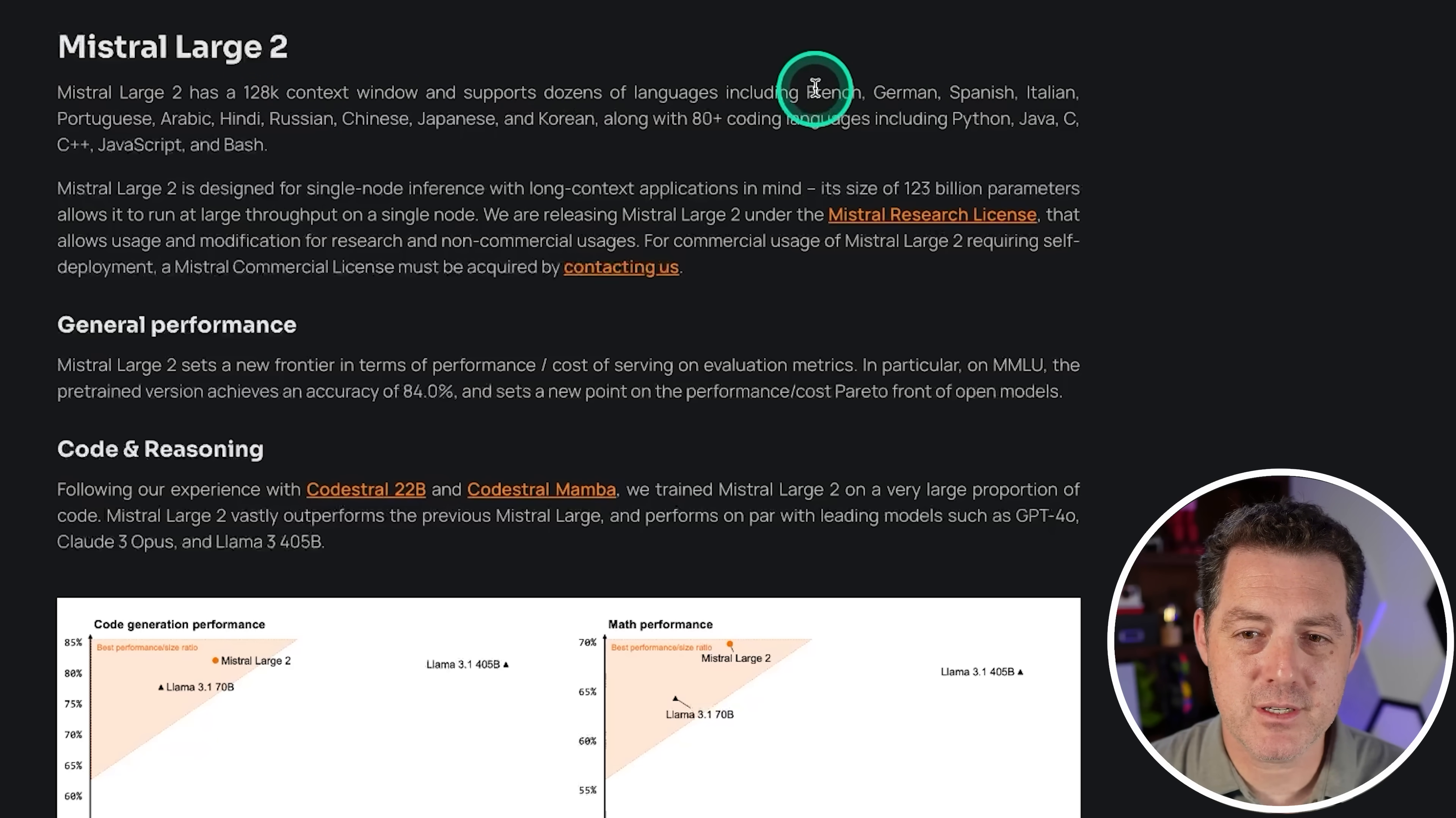Supports dozens of languages, including French, German, Spanish, Italian, Portuguese, Arabic, Hindi, and so on. It is designed for single node inference with long context applications in mind. It has 123 billion parameters, about a third of the size of the 405 billion parameter LLAMA 3.1 version. It is licensed under the Mistral Research License. And I hope that will change. In fact, Meta putting out LLAMA 3.1 405B in such a permissive license is putting pressure on all of the other companies to do the same. They are setting the standard, and I love it.